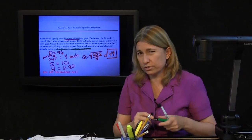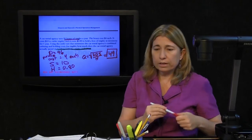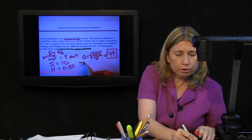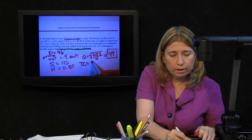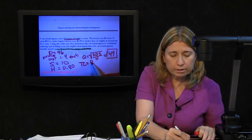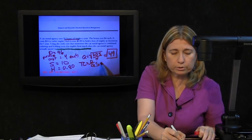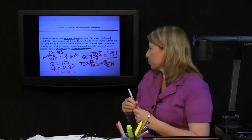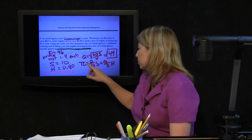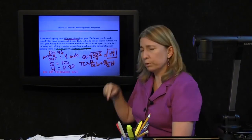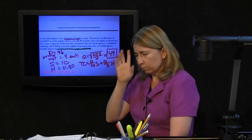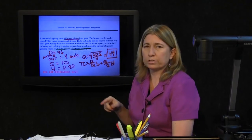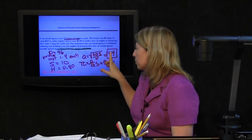Holding costs. The total cost formula is D divided by Q times S plus Q divided by 2 times H. What I just wrote down right here is the total cost formula that the EOQ minimizes. They're asking about the cost, so we'll use that.